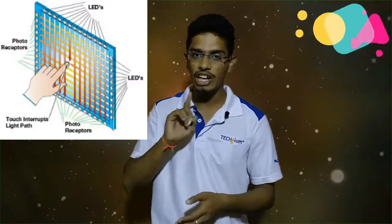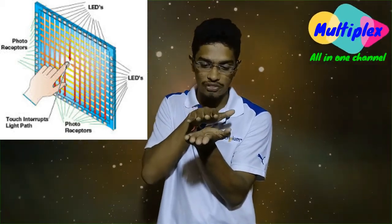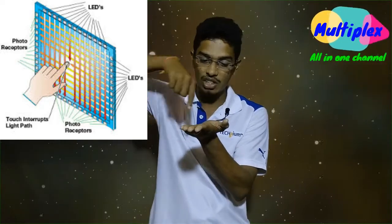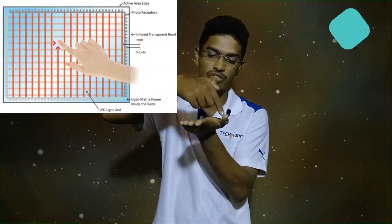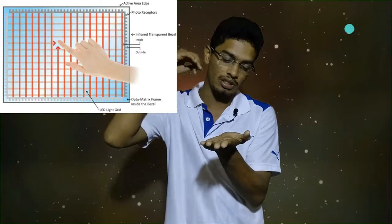Now the second type: perimeter-based touch screens. There are three technologies — infrared, surface acoustic wave, and optical. In infrared technology, beams pass in both X and Y directions across the screen. When you touch the screen, you block a beam in the X direction and a beam in the Y direction. The intersection point is the touch location, and the sensor is activated.